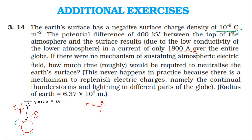We use the formula: current I is equal to charge Q divided by time t. Therefore, time t is equal to charge Q divided by current I. Also, surface charge density sigma is equal to charge Q divided by area A, so charge Q is equal to surface charge density sigma multiplied by area A.